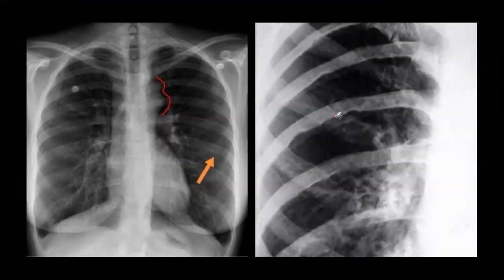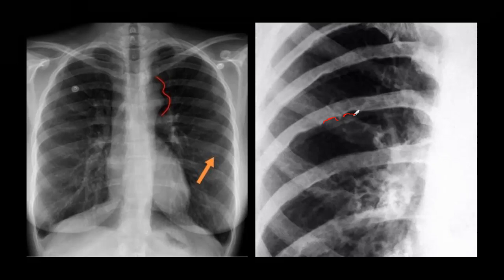This notching develops when collateral circulation forms in an attempt to bypass the aortic narrowing. This bypass circulation occurs between the anterior intercostals and the posterior intercostals. The anterior intercostals originate from the internal thoracic artery, while the posterior intercostals from the third through the eleventh originate from the descending thoracic aorta. The first two posterior intercostals originate from the supreme intercostal artery, a branch from the costocervical trunk from the second part of the subclavian artery. Therefore, notching will be seen from the third rib onwards but not the first and second ribs, as there will be no collateral circulation there.